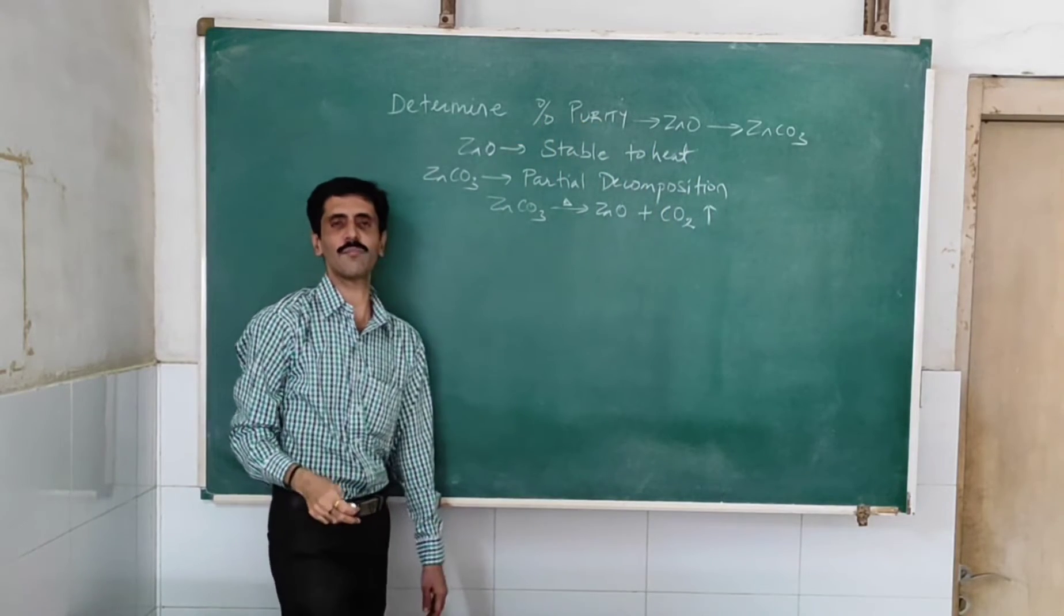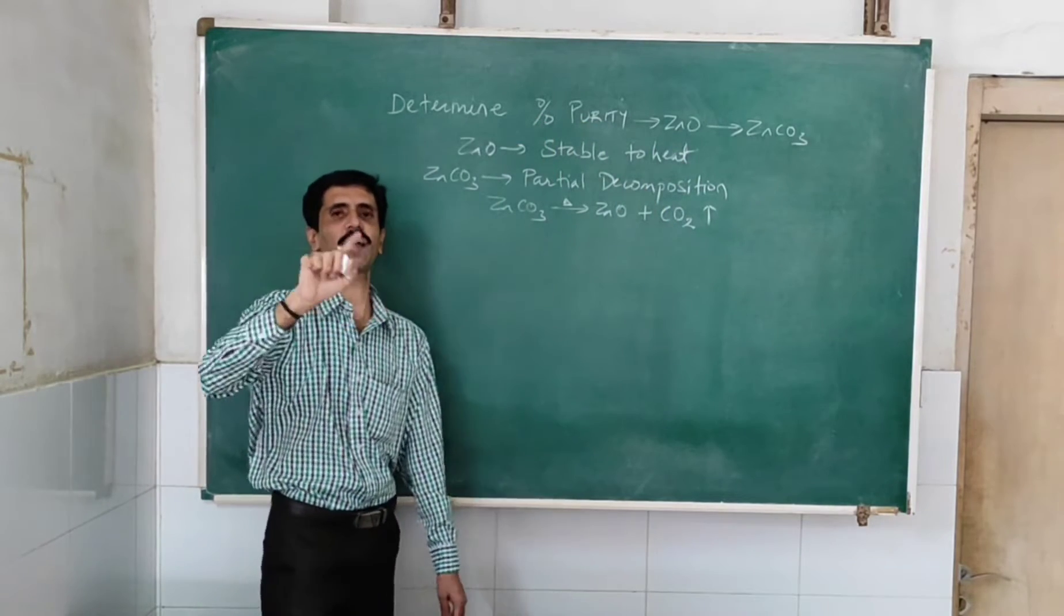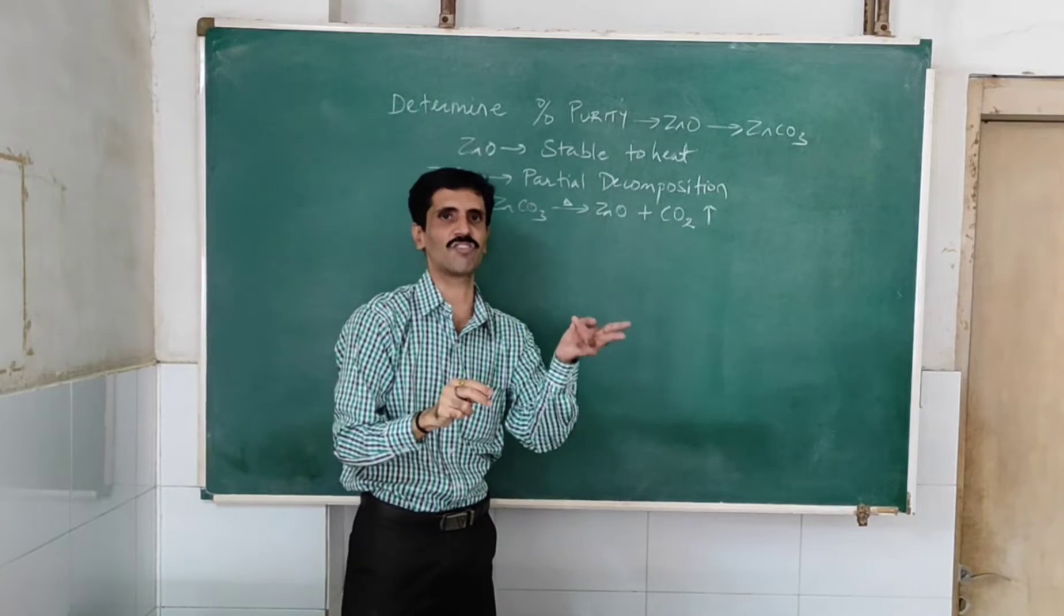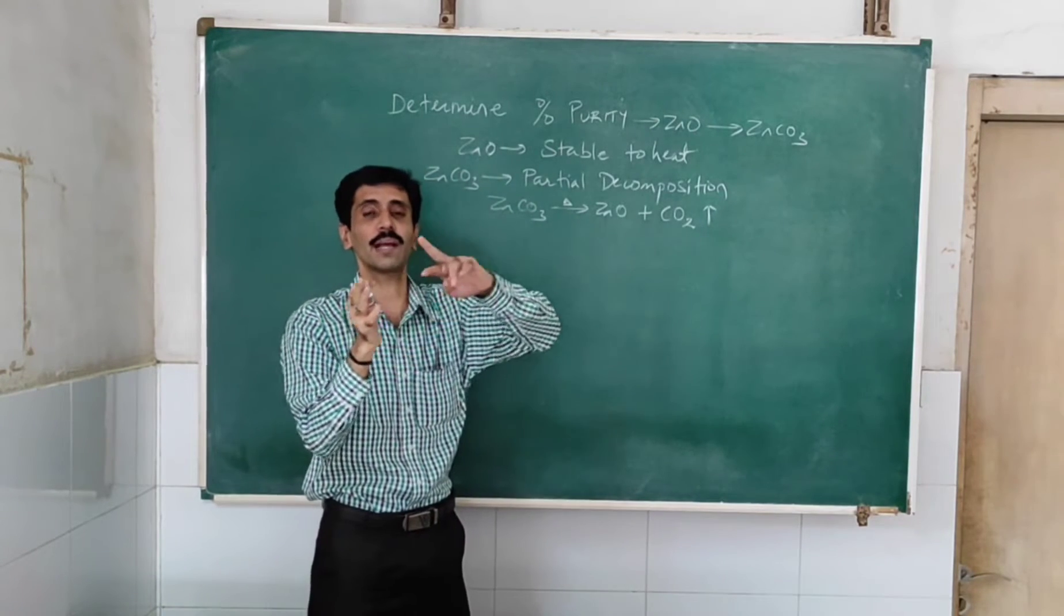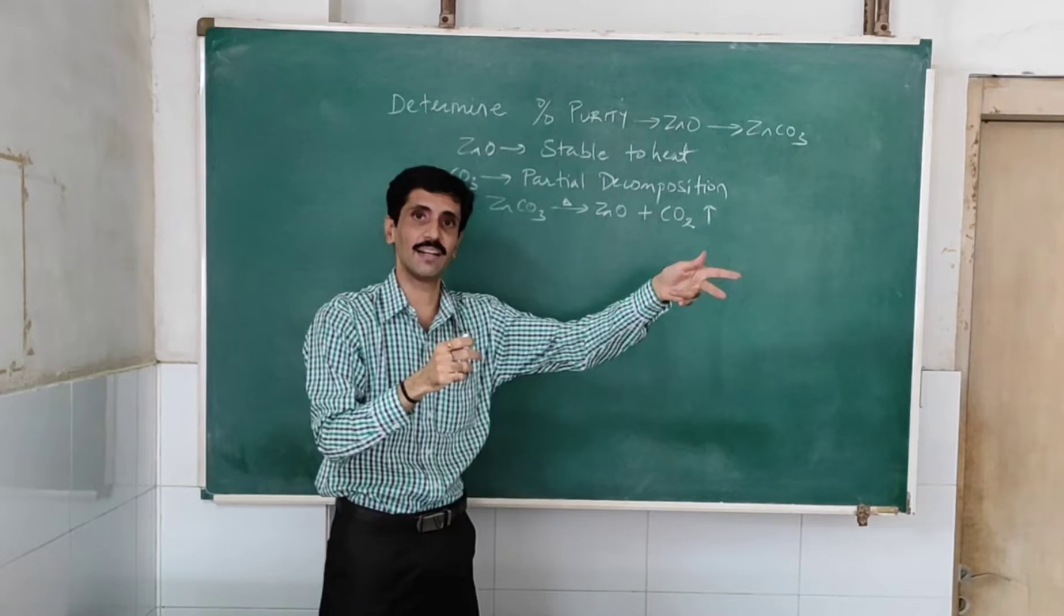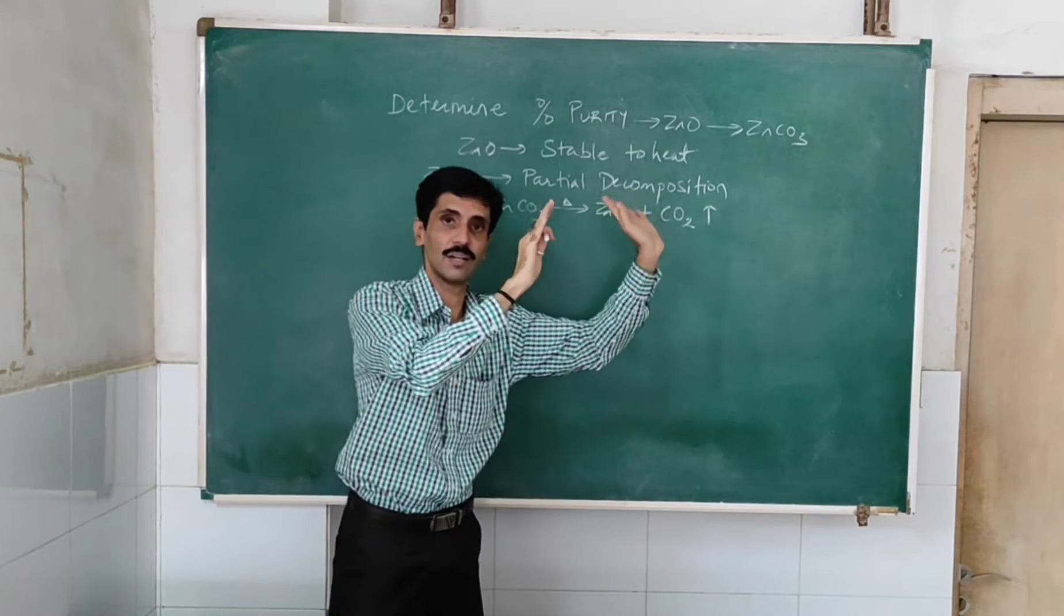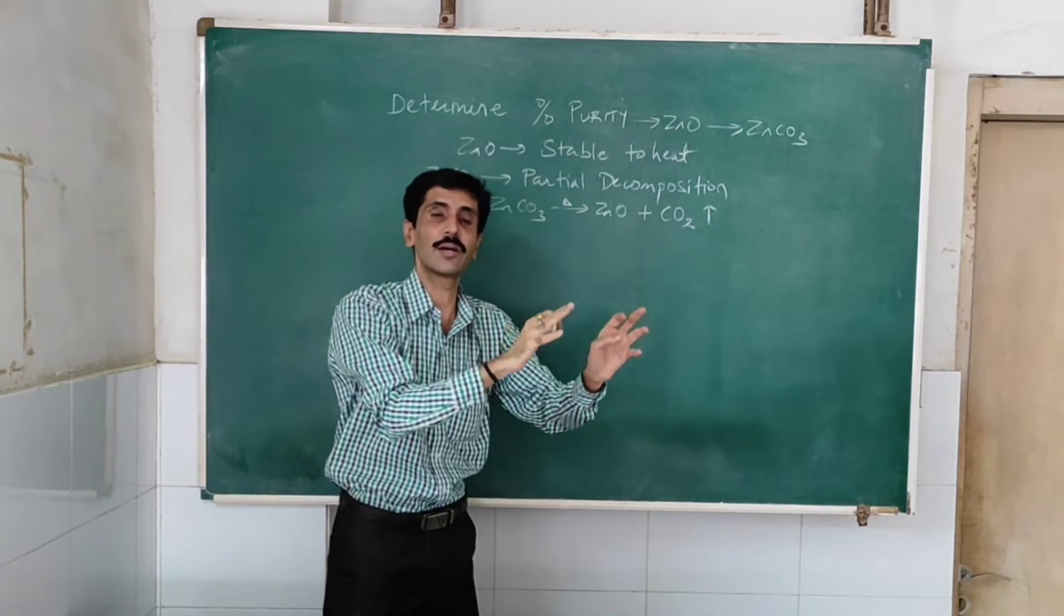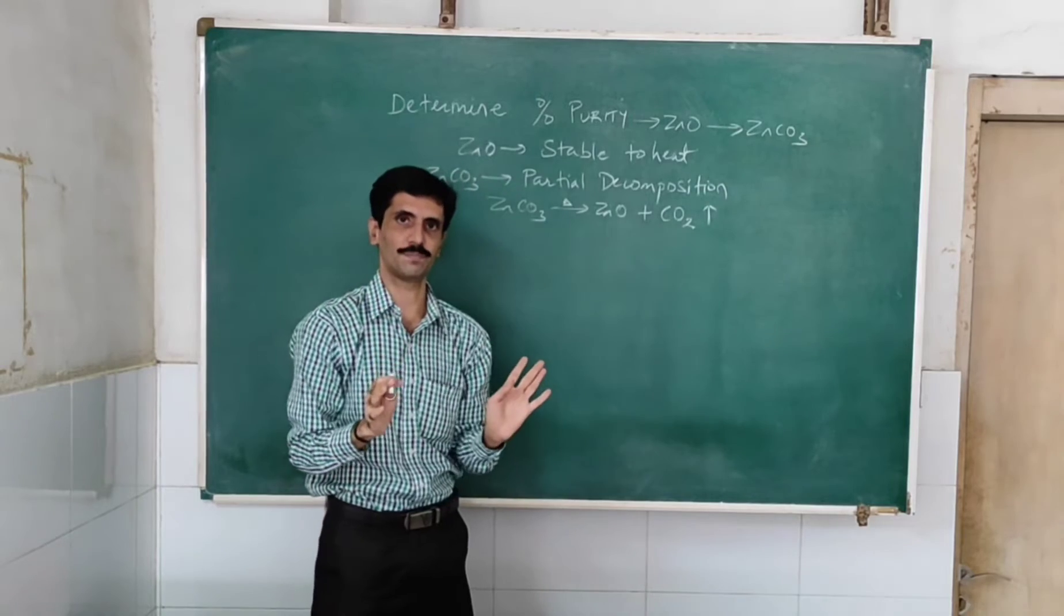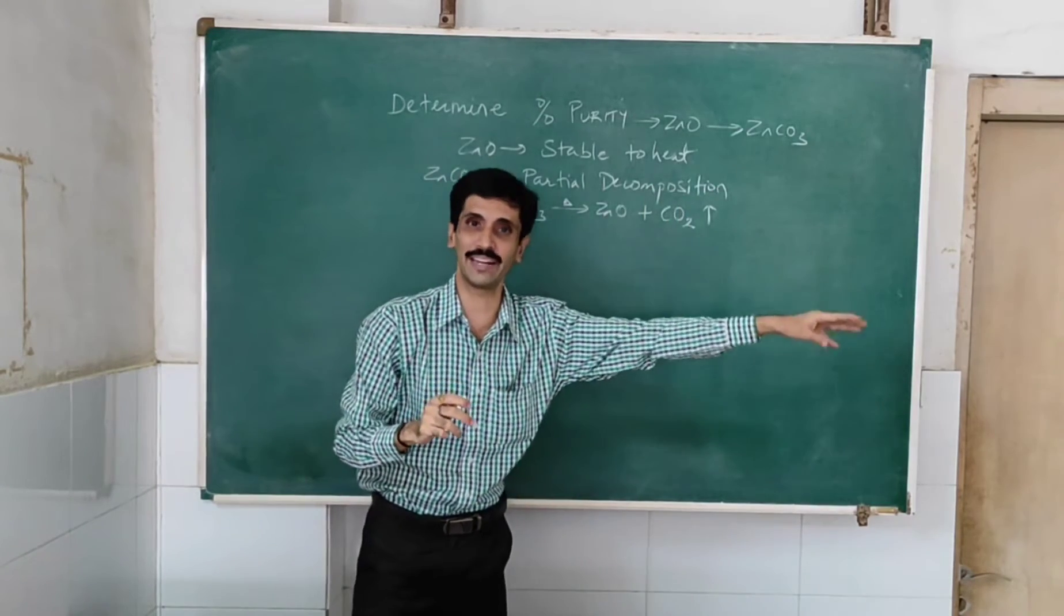If you have seen my previous video on barium sulfate and ammonium chloride, there was a difference. There, ammonium chloride was converted into NH3 and HCl, and both of them are volatile. So NH4Cl undergoes a complete decomposition into volatile components.